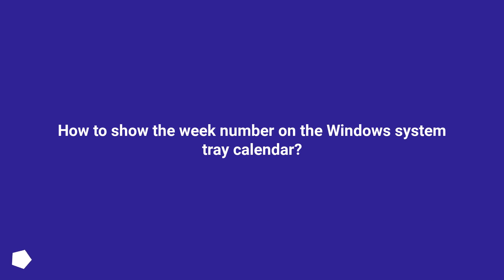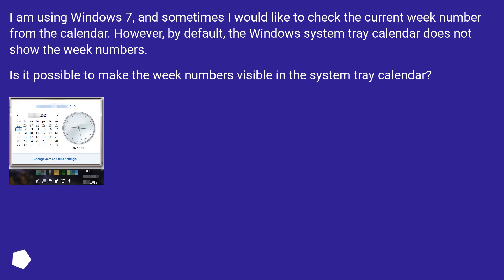How to show the week number on the Windows System Tray Calendar. I am using Windows 7, and sometimes I would like to check the current week number from the calendar. However, by default, the Windows System Tray Calendar does not show the week numbers. Is it possible to make the week numbers visible in the System Tray Calendar?